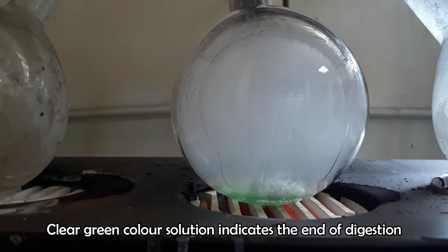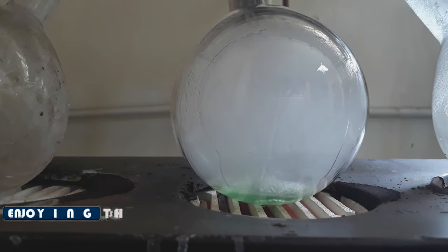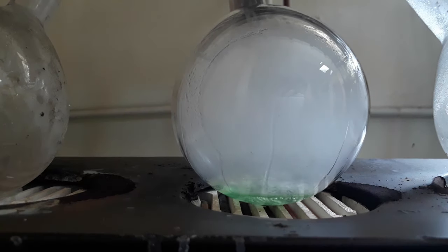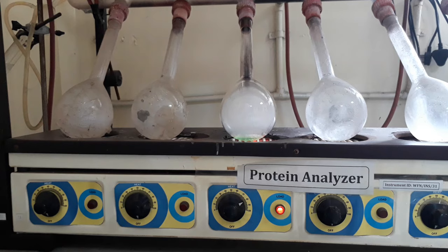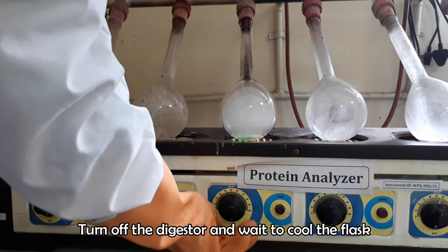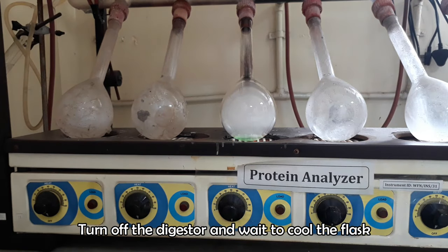After finishing the digestion, we will get a clear and green color digested juice of the sample, which will be used in the distillation step of this method. Cool the flask at room temperature.